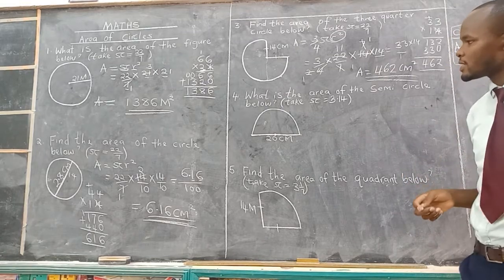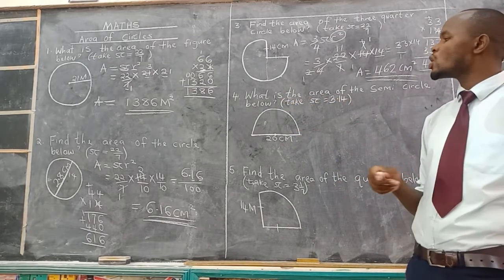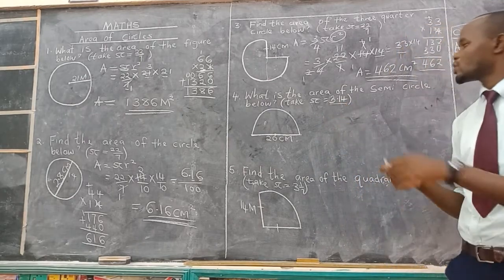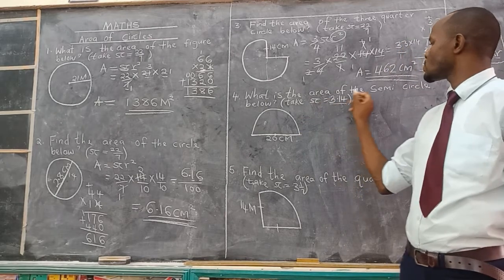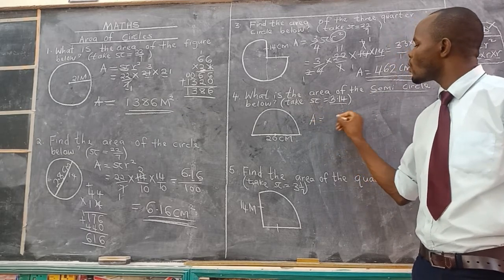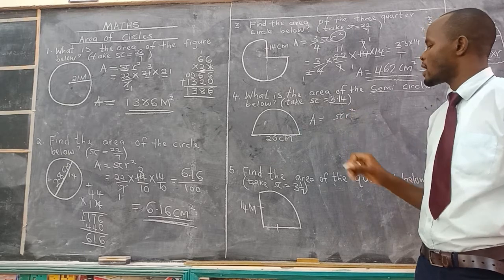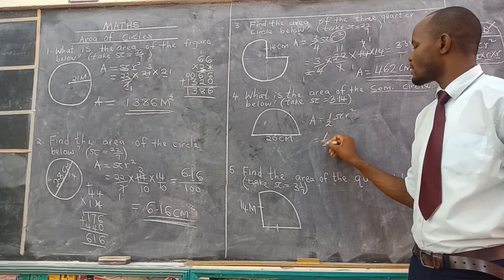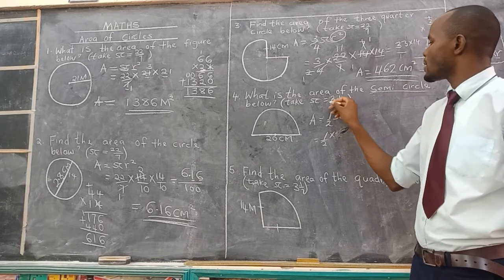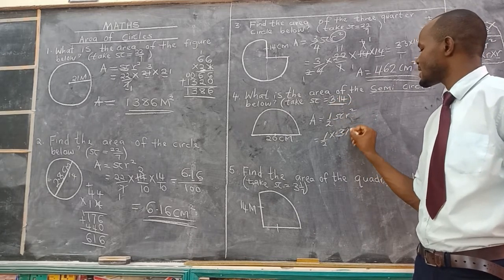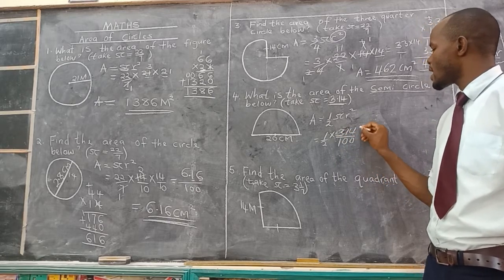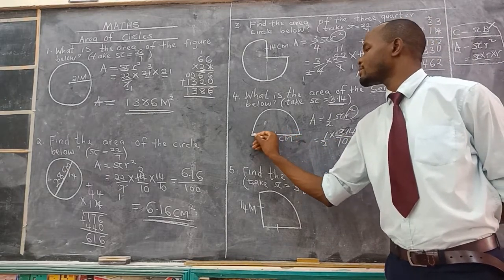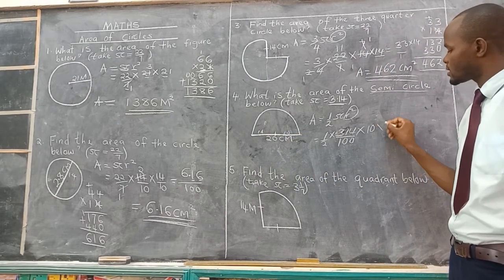Hope we are still together. Let's go to example number 4: what is the area of the semicircle? Take pi as 3.14. Since this is a semicircle, we use one half times pi r squared. Pi as 3.14 means 314 over 100. If the diameter is 20, the radius will be half the diameter, which is 10. So we have 10 times 10.